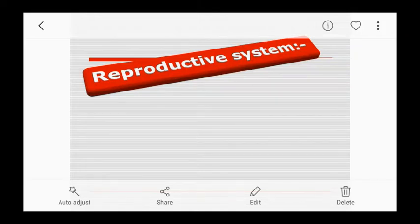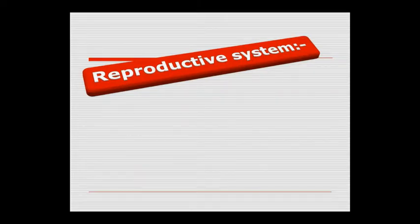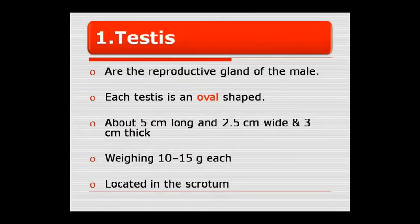Good morning class. This is our anatomy class in which today we will start about the structures related to the male reproductive system. First of all, we will study about the testis, which is the male reproductive gland.